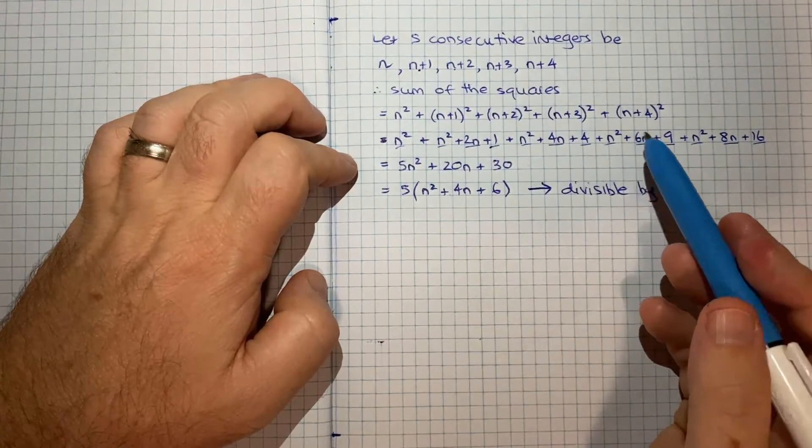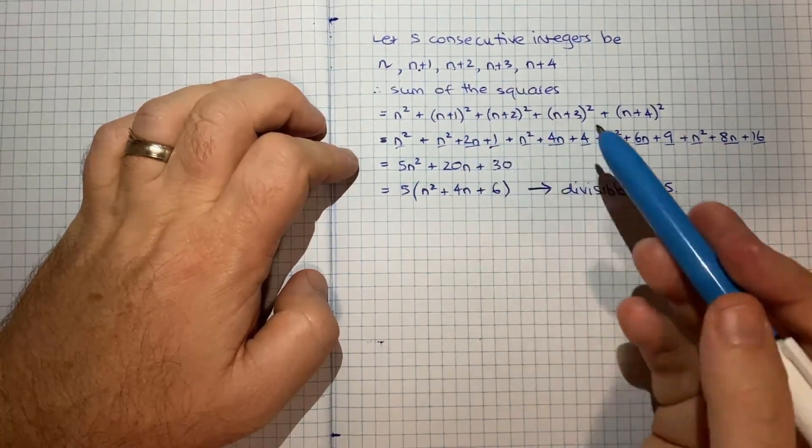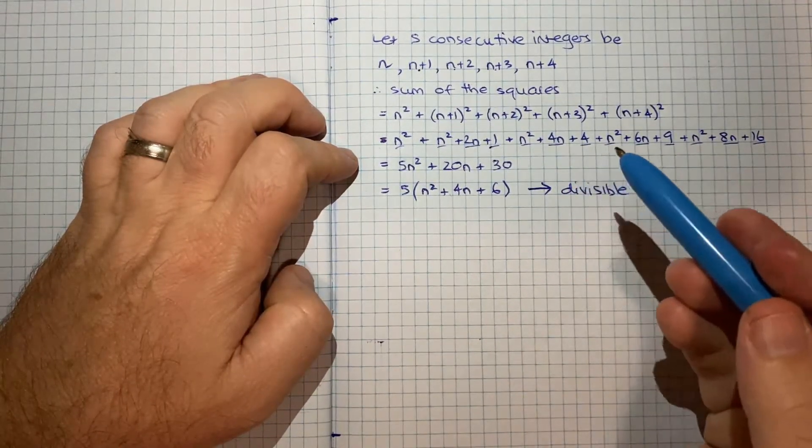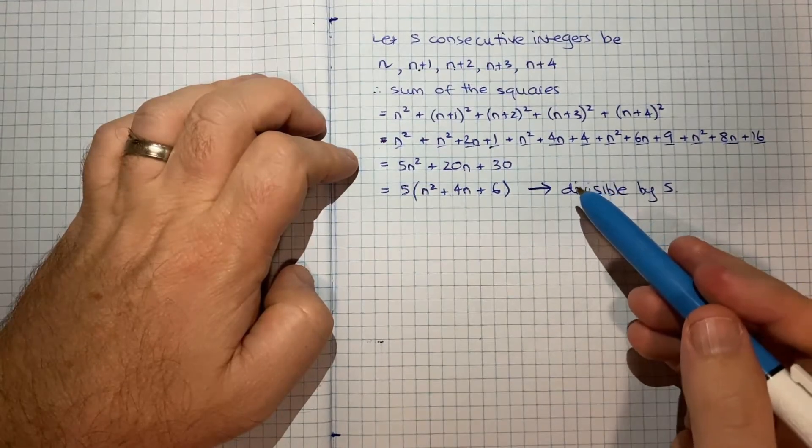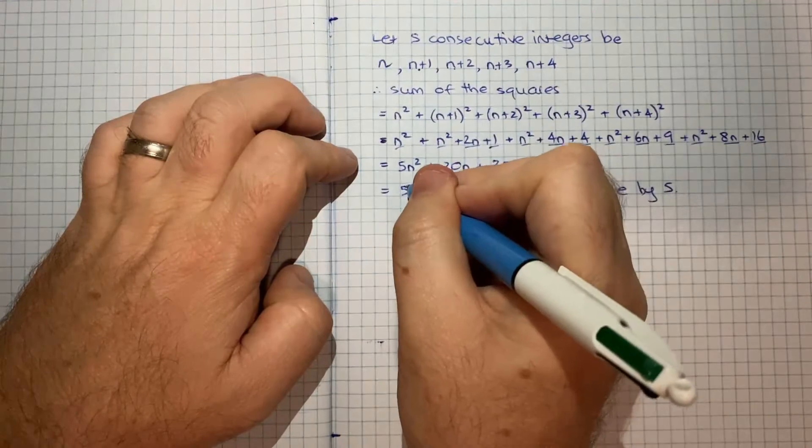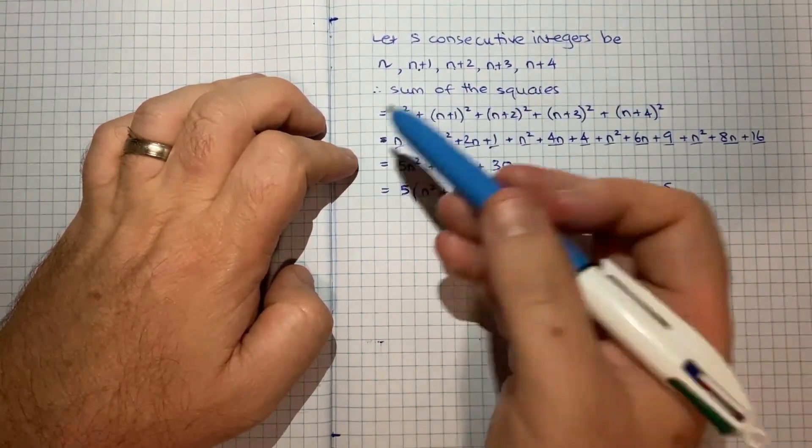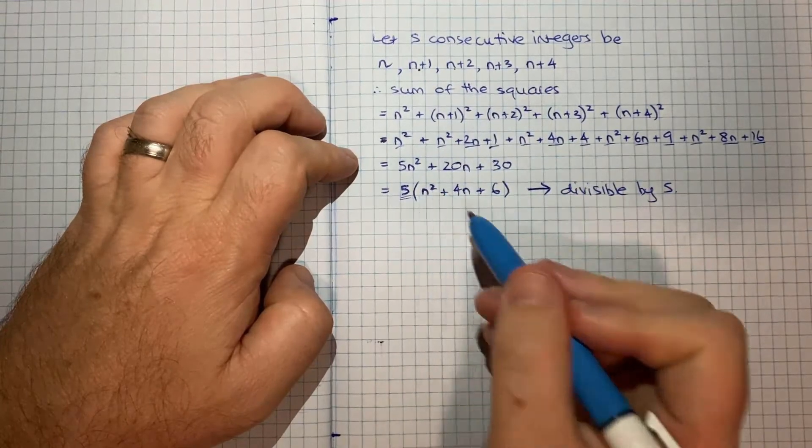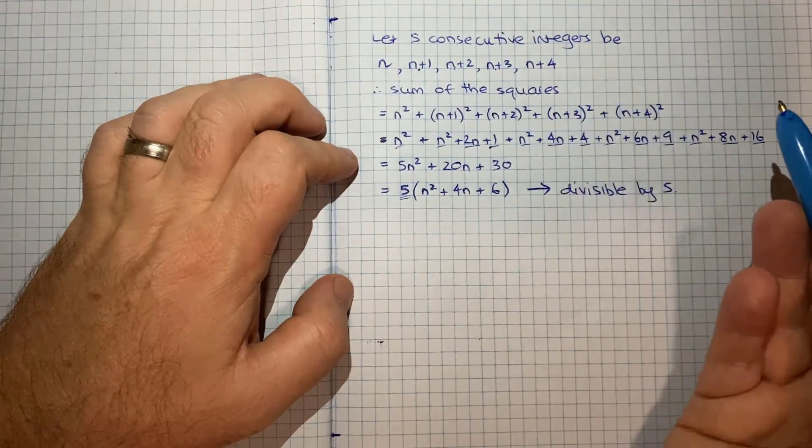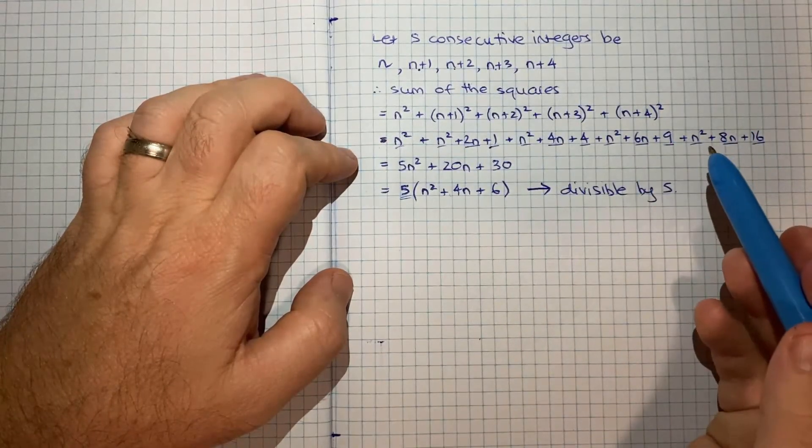But whenever you're asked to prove a question that involves proving something is divisible by something, one possible technique is to kind of do whatever you're being told and see if you can factor out that something. So if we want to show it's divisible by 5, we want to get something where you can factor out 5. In this case, that proved to be easy enough. It's not always that easy. Sometimes the techniques you need to use are a bit more complicated.